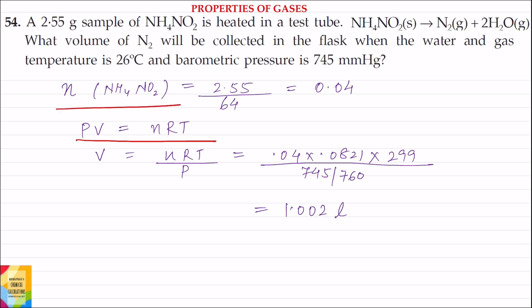So number of moles kase find out kareinge. Number of moles of NH4NO2 is equal to weight of NH4NO2 divided by its molecular weight and this is equal to 0.04 moles.